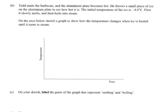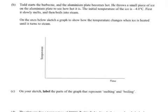Okay, moving on. Part B. Todd starts the barbecue and the aluminium plate becomes hot. He throws a small piece of ice on the aluminium plate to see how hot it is. The initial temperature of the ice is minus 4 degrees Celsius. First it slowly melts and then boils into steam. On the axes below, sketch a graph to show how the temperature changes when ice is heated until it turns to steam.